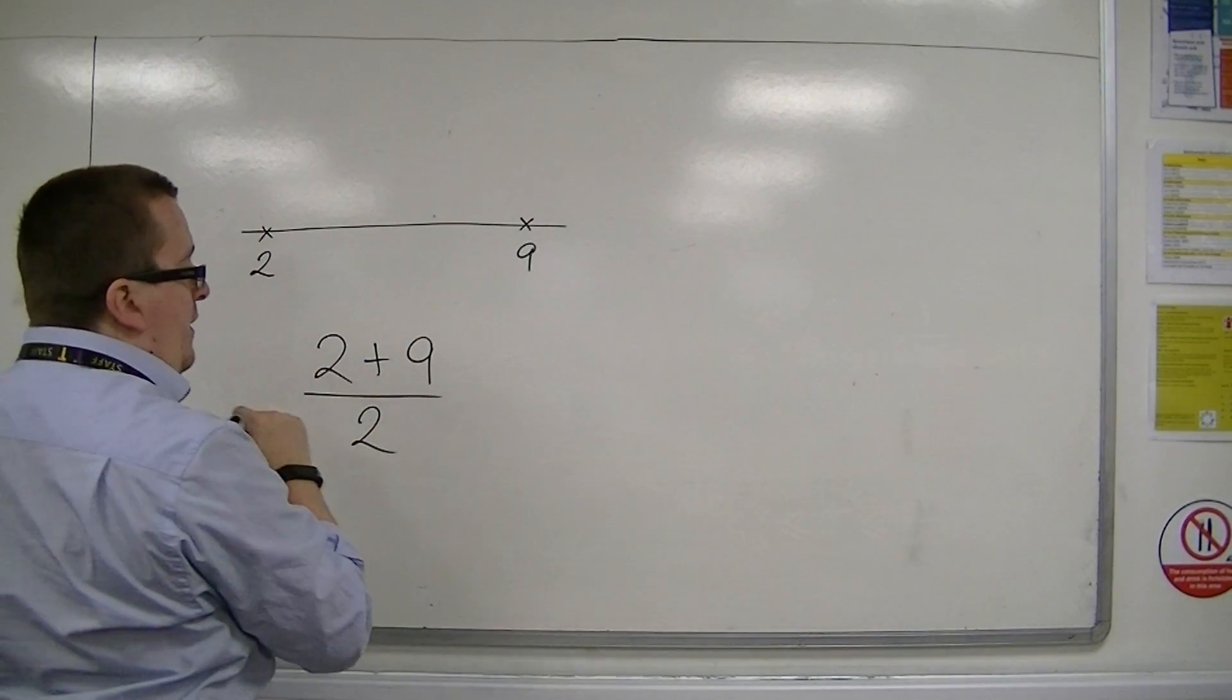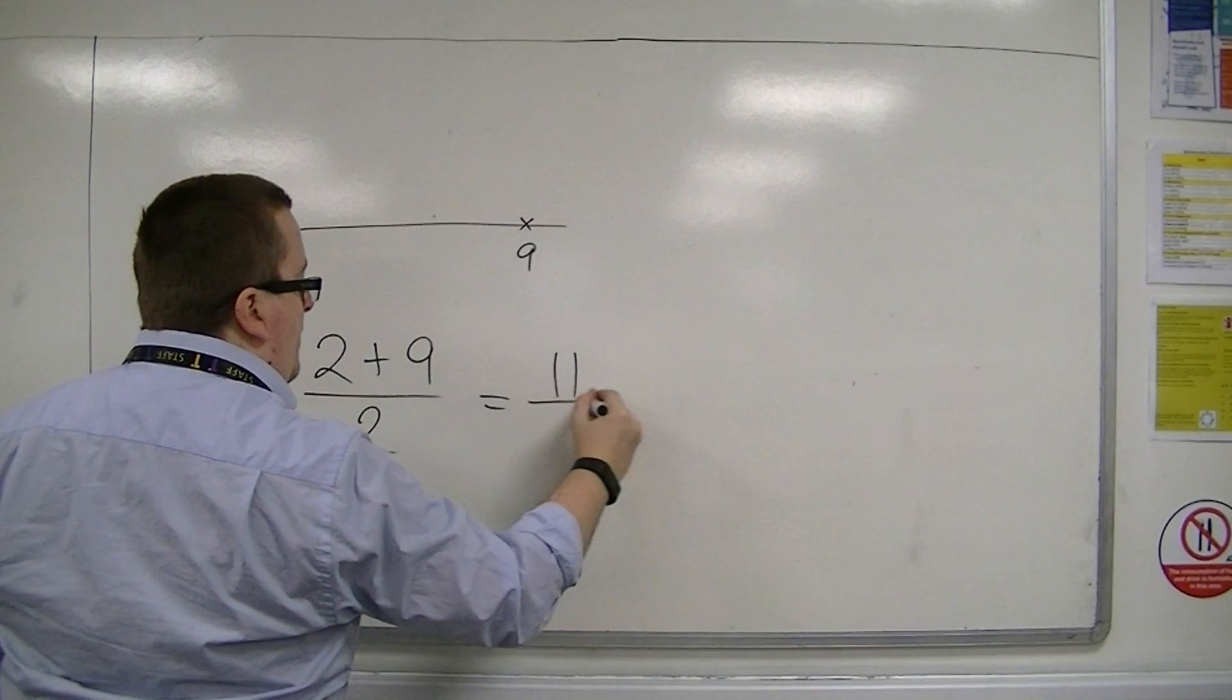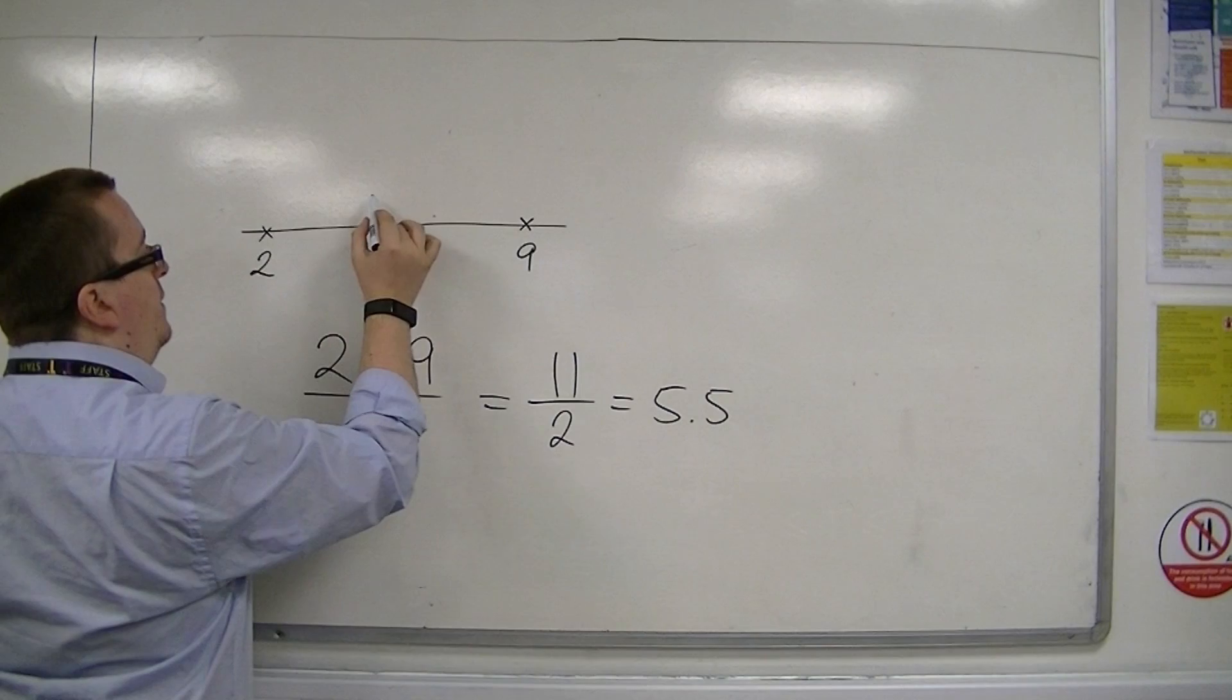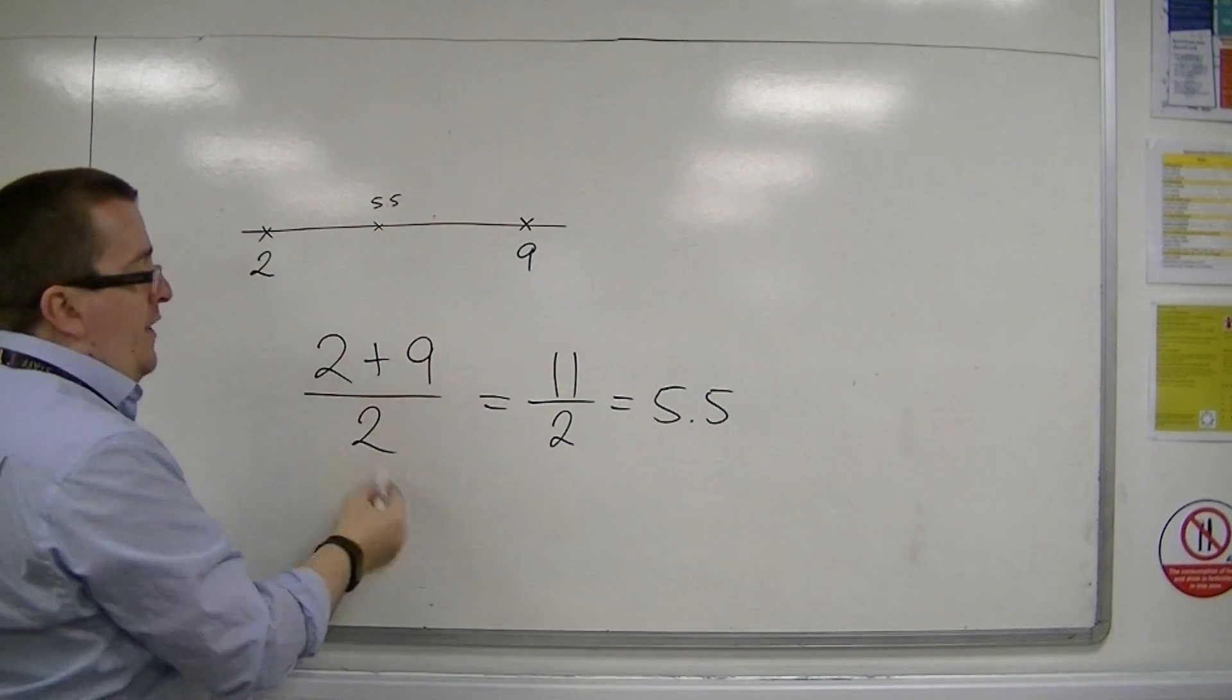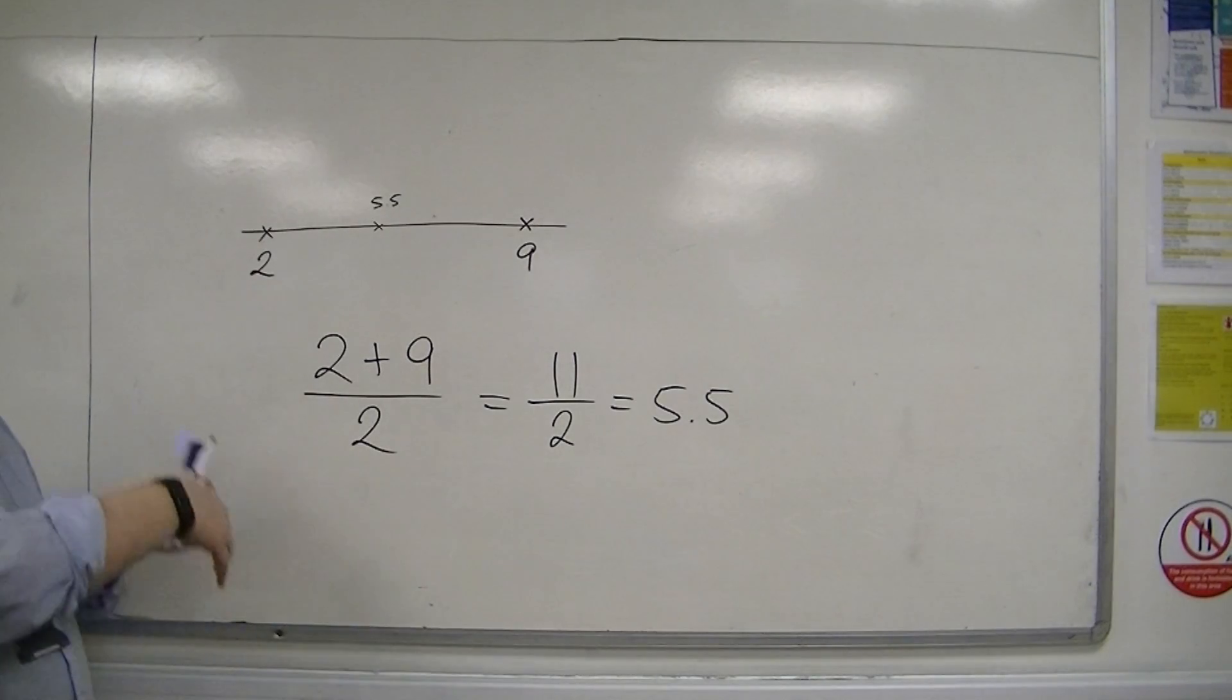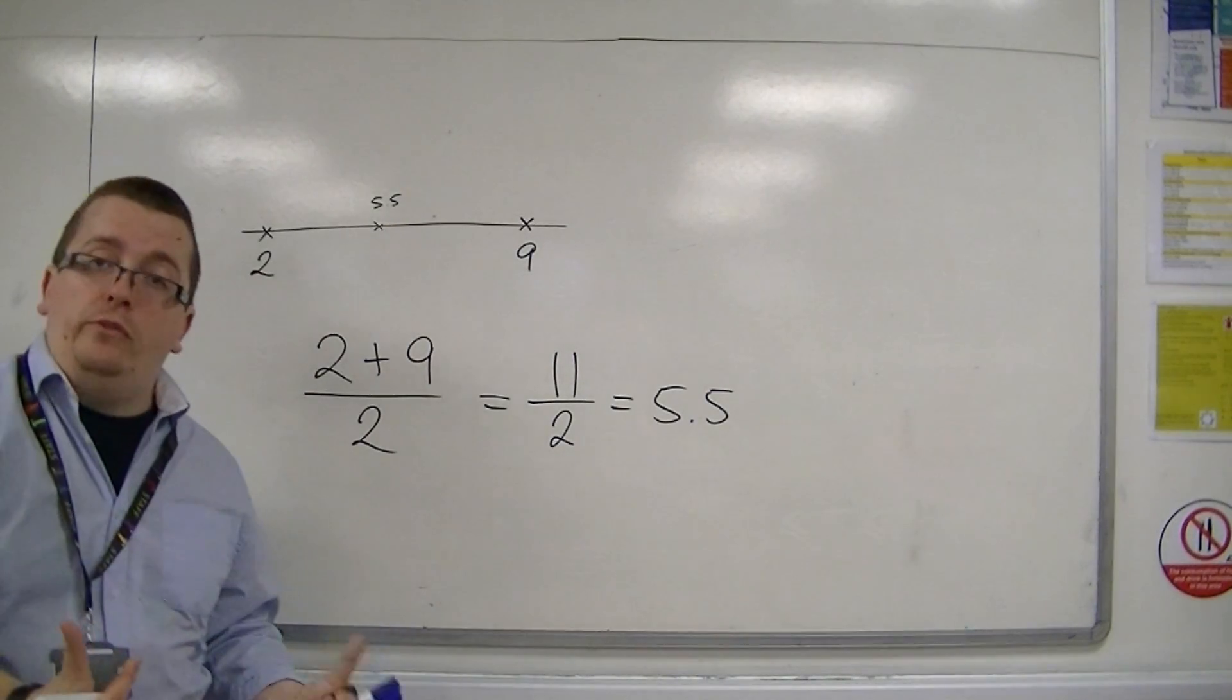So 2 plus 9 is 11, so I get 11 over 2, which is 5.5. So the midpoint between 2 and 9 is 5.5. And this method of adding them together and dividing by 2 will work for any two numbers that you care to use.